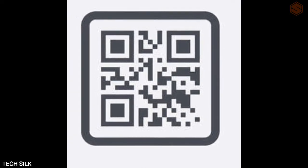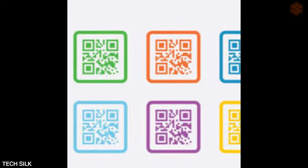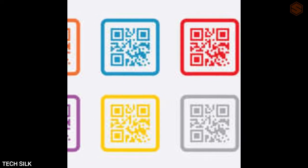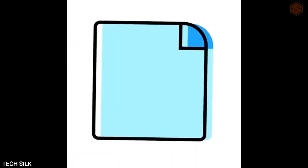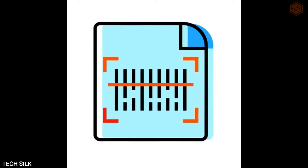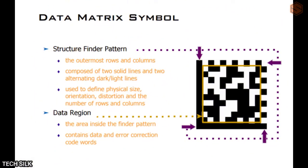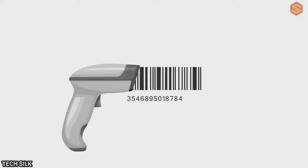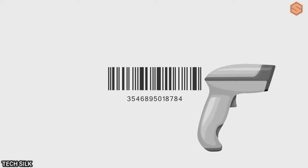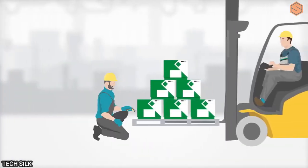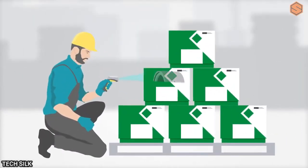Data matrix codes are typically square in shape, but can also be rectangular. They are constructed from an assortment of bright and dark square dots, also known as cells, placed in a grid or matrix. Even though they are usually printed in black and white, data matrix codes can be printed in a variety of color combinations, as long as there is adequate contrast between dark and light cells. An L-shaped finder pattern on one side guides camera scanners to the correct barcode location.